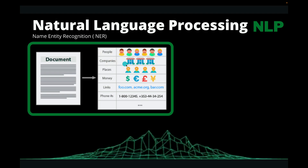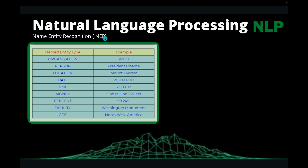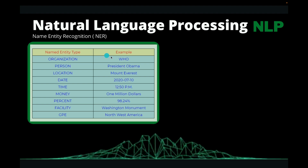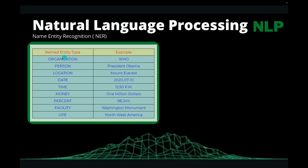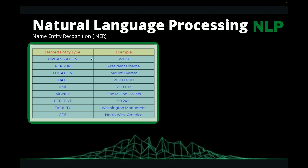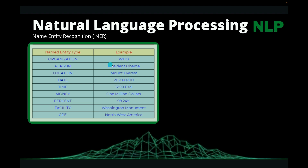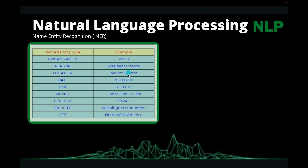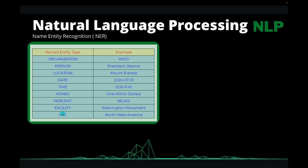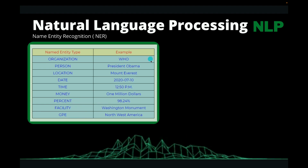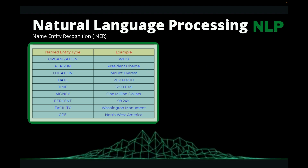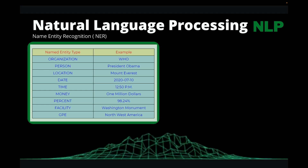In an NLP task involving Named Entity Recognition, there are various types of entities you can identify: organization (for example, the World Health Organization), person (for example, President Obama), location, date, time, money, percent, facility, geopolitical entities, and so on. Those are the things that a Named Entity Recognition model is going to identify.